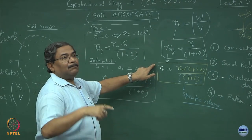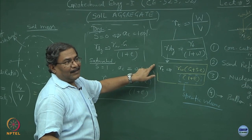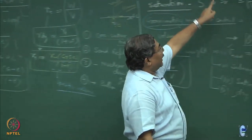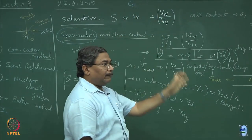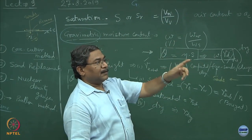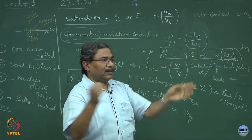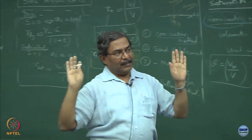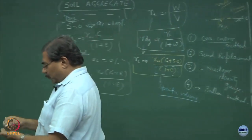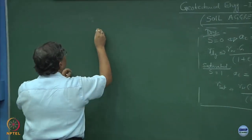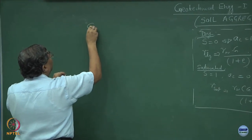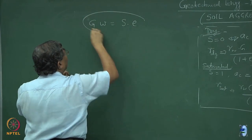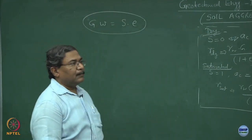If a soil is a multi-mineral soil, you go for a composite weighted average of G. The phase relationship S·e = G·w connects gravimetric and volumetric phenomena — and this is actually a philosophical inconsistency in geomechanics: G is gravimetric, w is gravimetric, but e and porosity are volumetric. This mixing of gravimetric and volumetric is the biggest flaw in classical geomechanics, but it is the starting point.